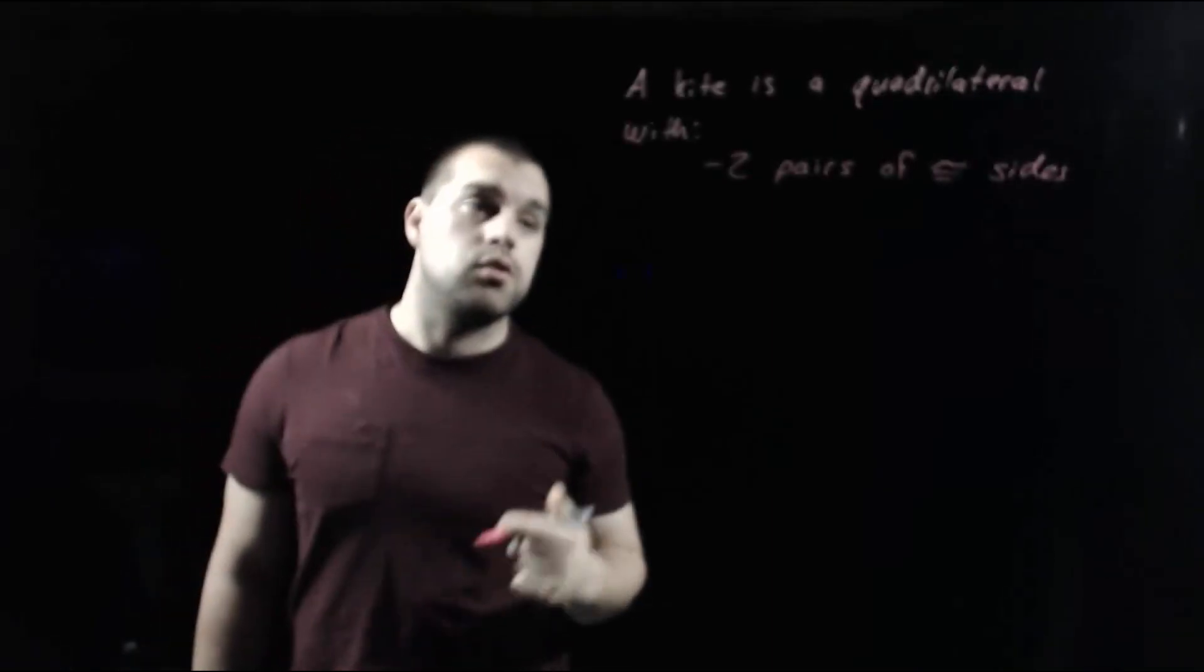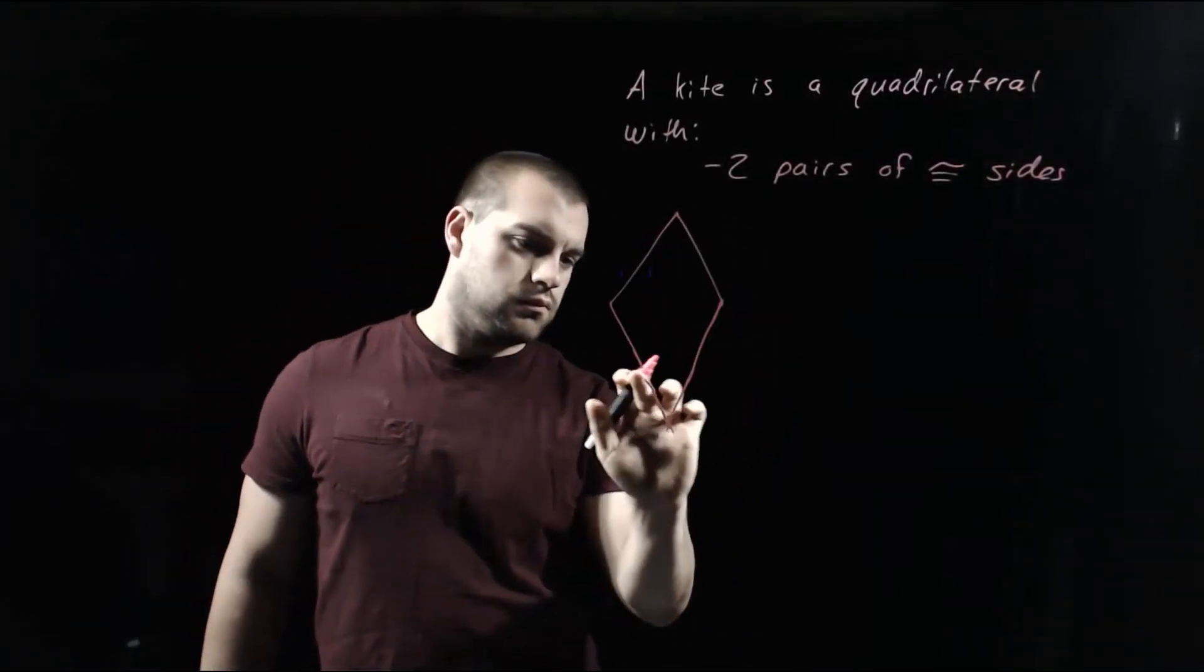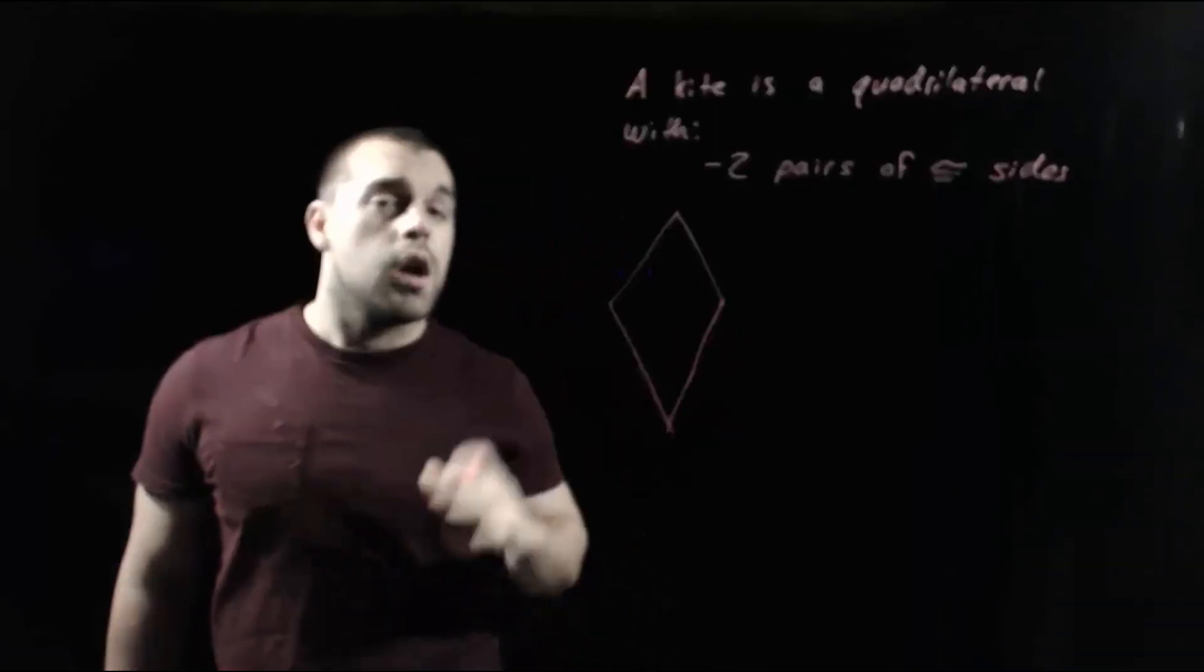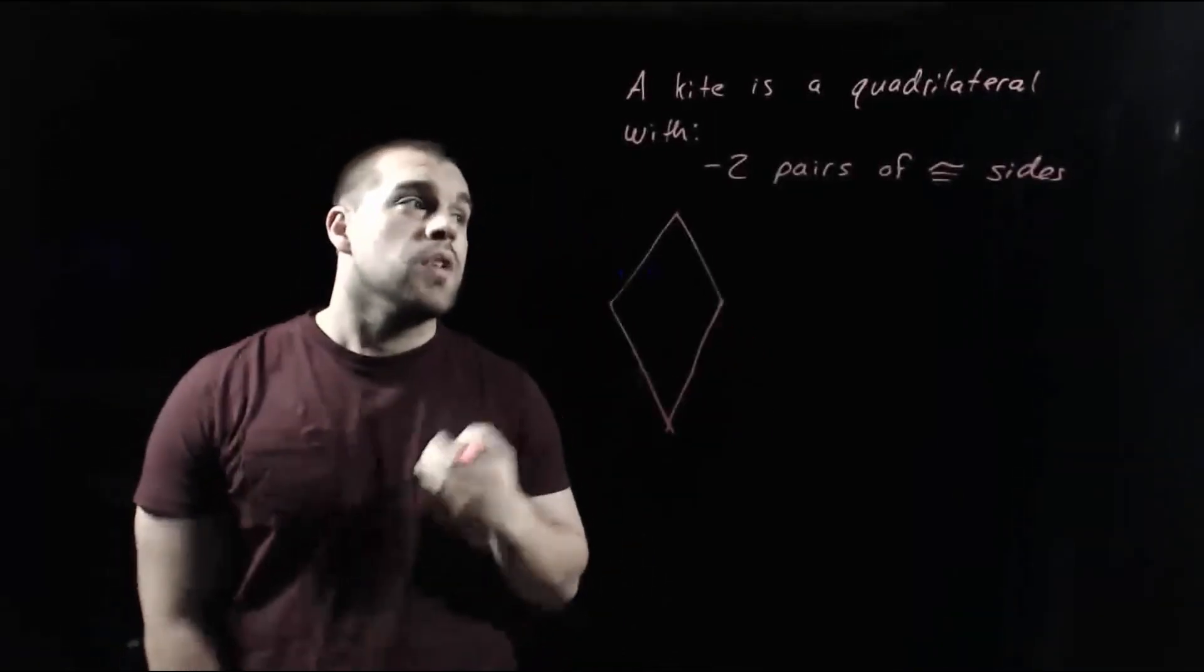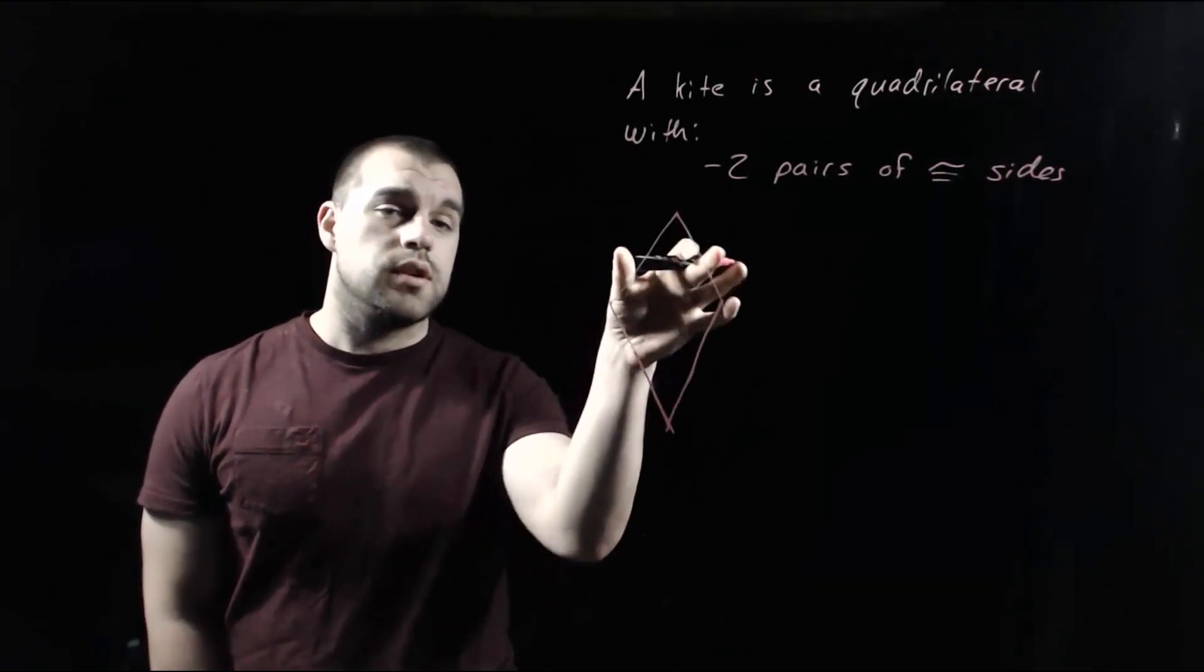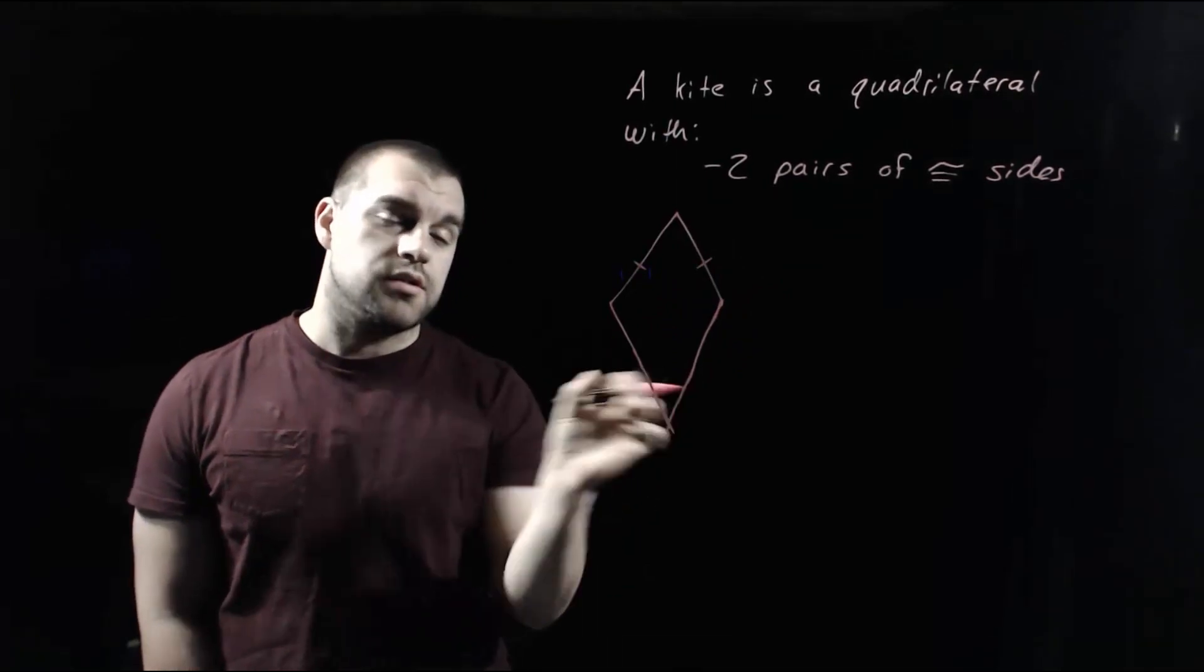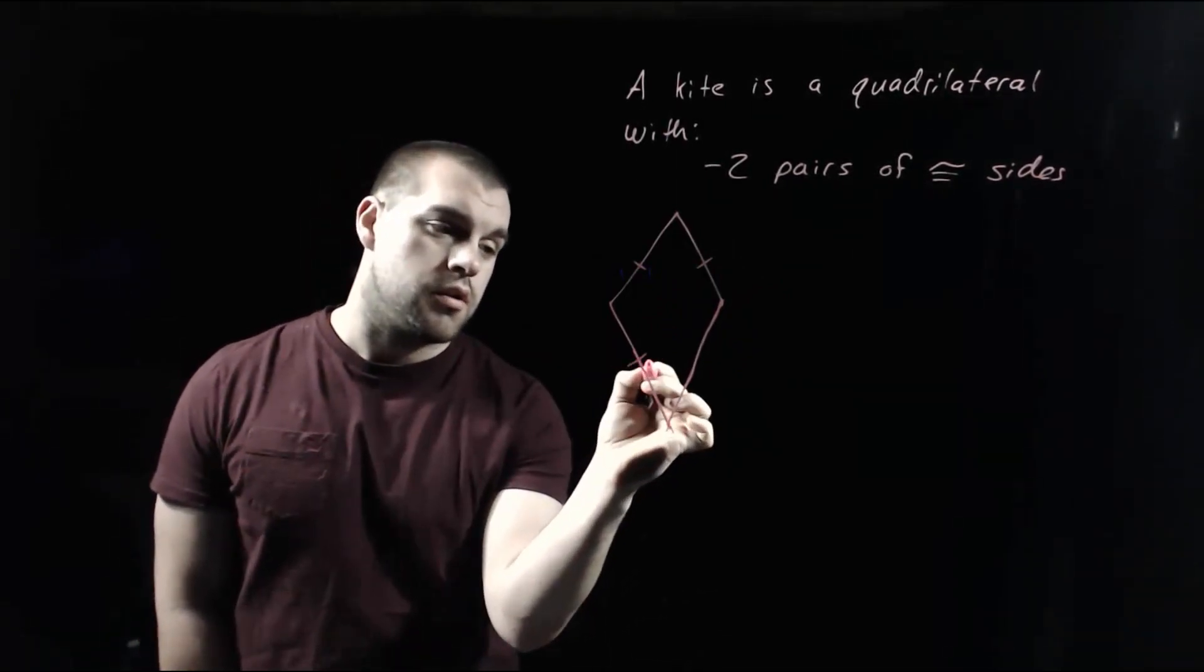So if we look at drawing out a picture of a kite, a kite ends up looking something like this. The two pairs of congruent sides are consecutive sides. So these two short sides on top are going to be congruent to each other, and these two longer sides on bottom are also going to be congruent to each other.